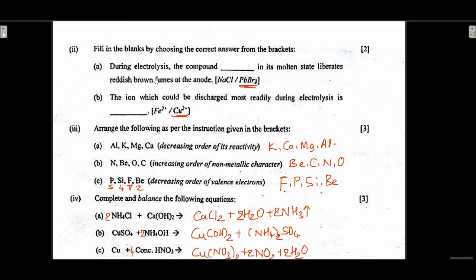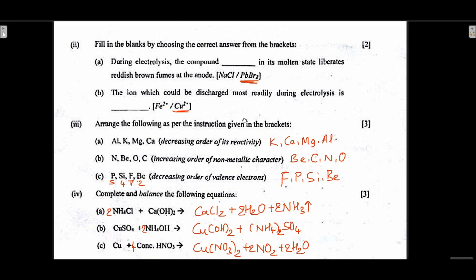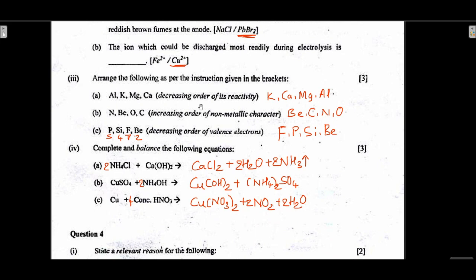Fill in the blanks: first answer is PbBr2; second is Cu2+ most readily discharged. Arrange in decreasing order of reactivity: potassium, calcium, magnesium, aluminium. Increasing order of non-metallic character along the period: beryllium, carbon, nitrogen, oxygen. Decreasing order of valence electrons: fluorine (7), phosphorus (5), silicon (4), beryllium (2) — so F, P, Si, Be.